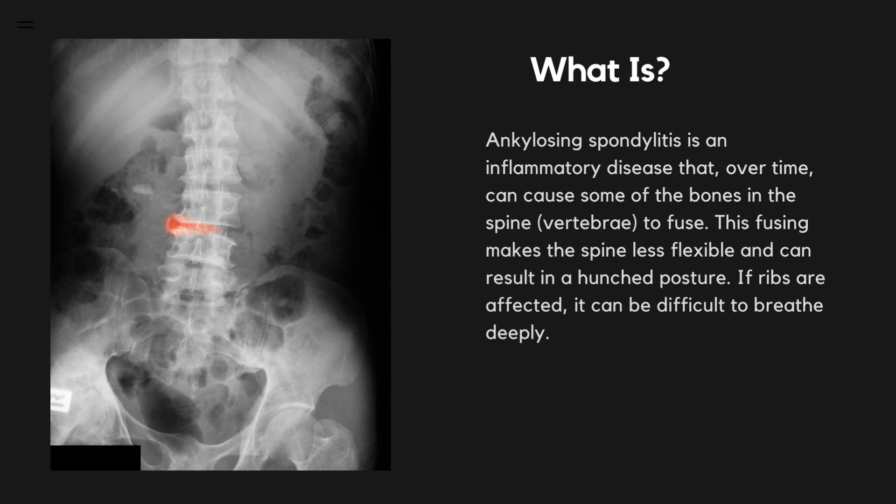Ankylosing spondylitis is an inflammatory disease that, over time, can cause some of the bones in the spine (vertebrae) to fuse. This fusing makes the spine less flexible and can result in a hunched posture. If ribs are affected, it can be difficult to breathe deeply.